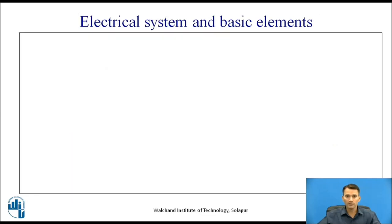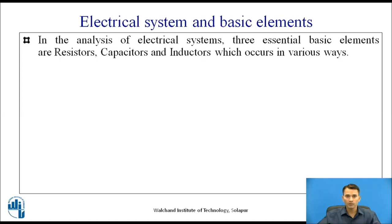Now let us see electrical system and basic elements. In the analysis of electrical systems there are three essential basic elements: resistors, capacitors, and inductors, which may occur in various ways in an electrical system or circuit.